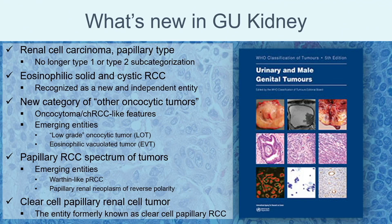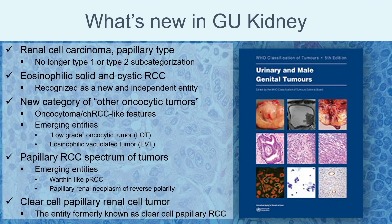For oncocytic tumor categorization, we now have oncocytoma and chromophobe RCC-like features as a category. The door has been opened for classifying oncocytic tumors more broadly — not just oncocytoma — into oncocytic renal neoplasm NOS. New emerging entities include low-grade oncocytic tumor (LOT) and eosinophilic vacuolated tumor (EVT). These are currently emerging entities not yet used in clinical sign-out, but will likely become official entities. For papillary RCC, emerging subtypes include warthin-like papillary RCC and papillary renal neoplasm of reverse polarity (PRNRP), which I will touch on in the papillary section.